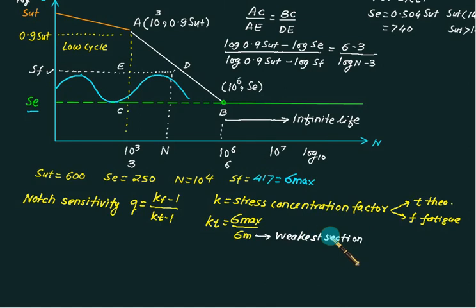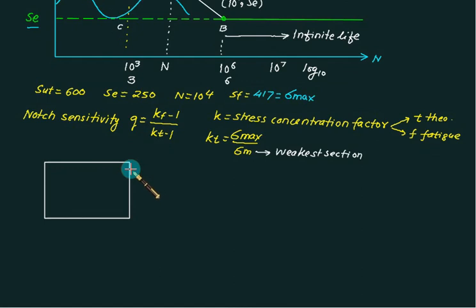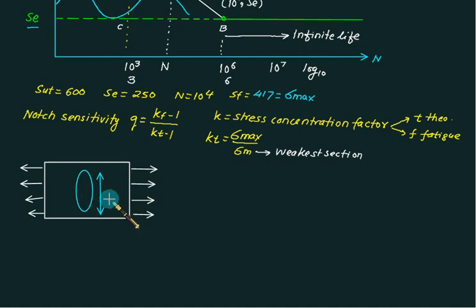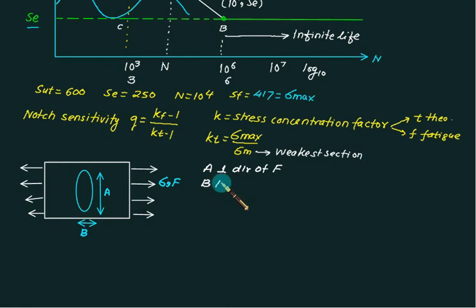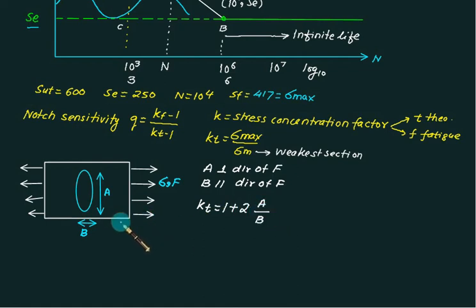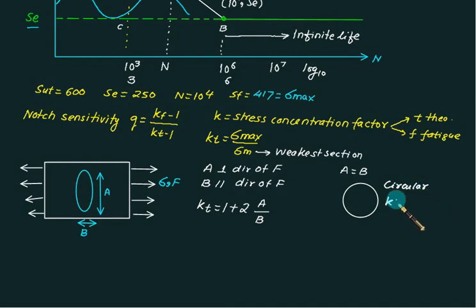Suppose we have a section subjected to uniform stress with an elliptical hole inside. Dimension A is measured perpendicular to the direction of stress/force, and dimension B is measured parallel to the direction of stress. Then Kt = 1 + 2(a/b), where a is the perpendicular dimension and b is the parallel dimension. In the special case of a circular hole, a = b, so Kt = 1 + 2 = 3, a fixed value.